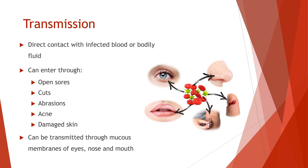Bloodborne pathogens are transmitted through direct contact with infected human blood or other bodily fluids. Your skin provides an effective barrier against some but not all bloodborne pathogens. Infected blood can enter your system through open sores, cuts, abrasions, acne, or any damaged or broken skin. Bloodborne pathogens may also be easily transmitted through mucous membranes of the eyes, nose, and mouth.